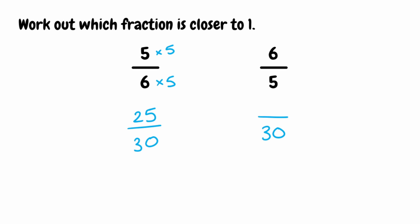For the other fraction, to get from 5 to 30 we must have multiplied by 6. So because we've done that to the denominator, we need to do that to the numerator as well. 6 multiplied by 6 gives us 36. So the equivalent fraction for 6 fifths is 36 over 30.